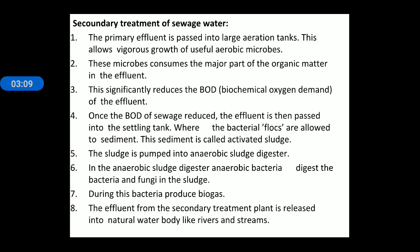Once the BOD of the sewage is reduced, the effluent is then passed into a settling tank where bacterial flocs are allowed to sediment. This sediment is called activated sludge. This sludge is then pumped into an anaerobic sludge digester, where anaerobic bacteria digest the bacteria and fungi in the sludge. During this process, bacteria also produce biogas. The effluent from secondary treatment is then released into natural water bodies like rivers and streams.